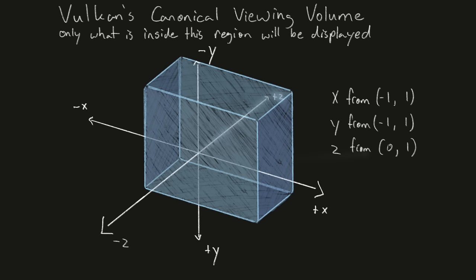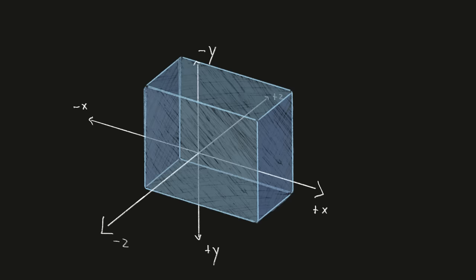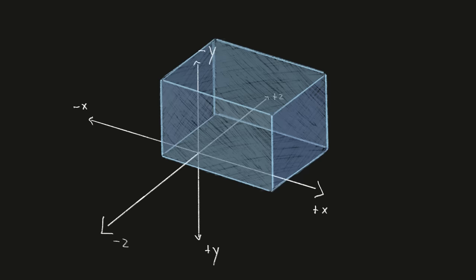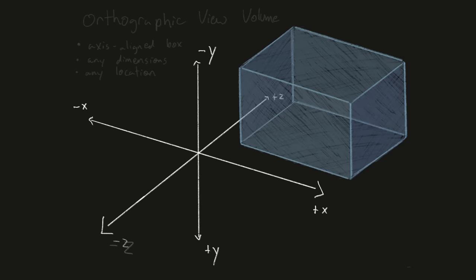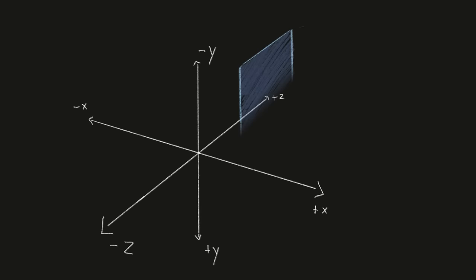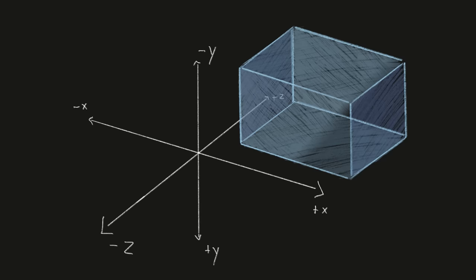An orthographic projection is a generalization of the view volume that allows us to specify whatever dimensions and whatever location we want, but maintains the overall shape of the view volume and keeps the view direction and orientation fixed. The orthographic view volume is defined by 6 bounding planes. The left and right along the x-axis, the top and bottom along the y-axis, and the near and far planes along the z-axis.